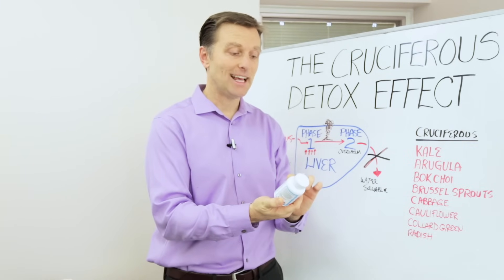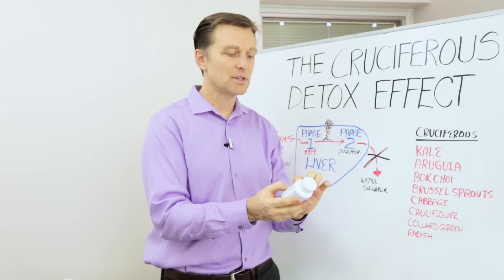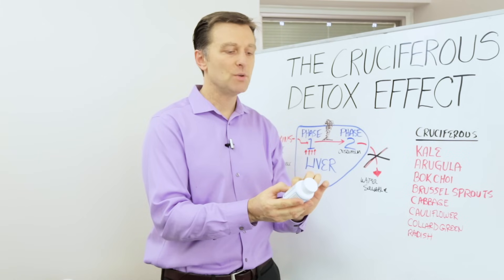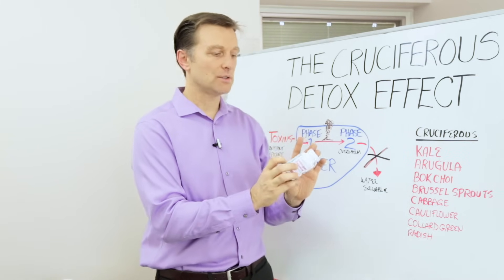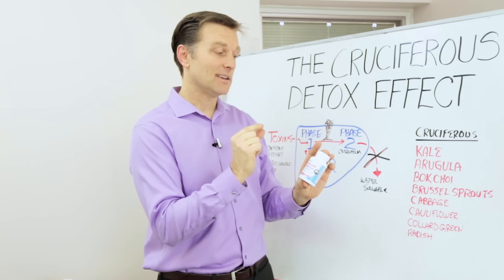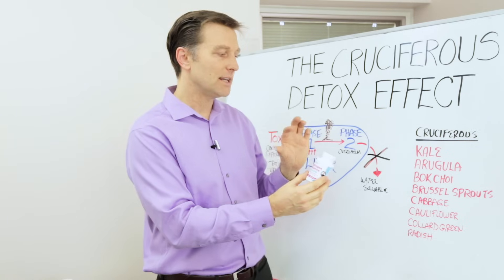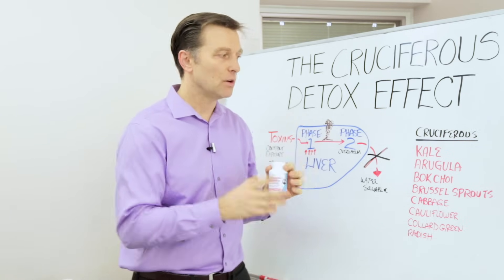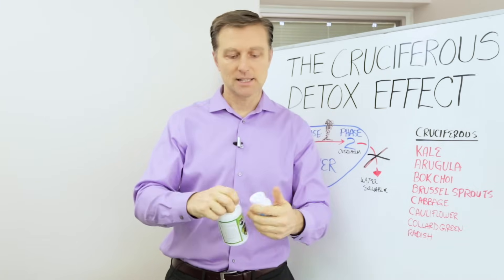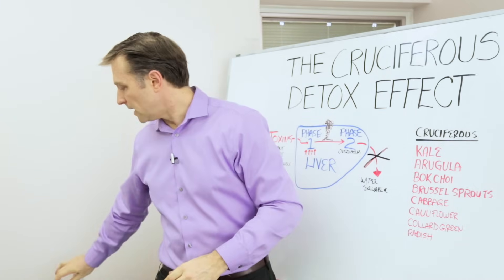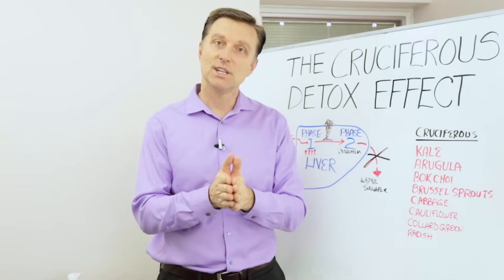It has vitamin E, kale, cabbage, a lot of cruciferous, but it also has DIM, turmeric, and a couple of other things to support the adrenals. So it's an upgraded version of my ovarian formula, but with a lot of enhancements. If you're interested in either one of these, you can click the link below and get more information. Anyway, I wanted to thank you for watching this. I hope you learned something new and I will see you in the next video.